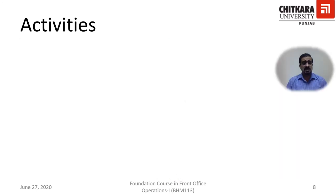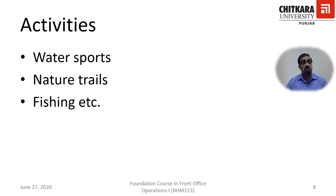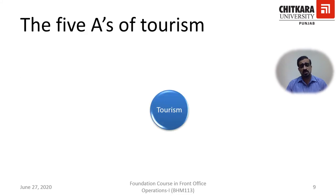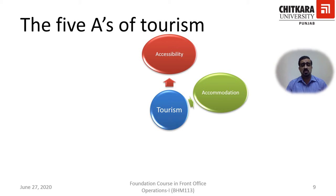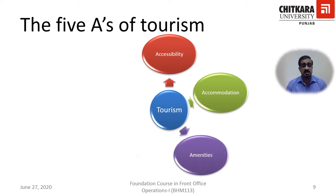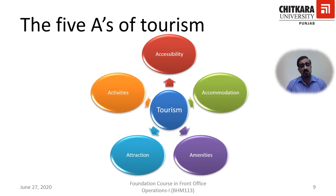There is also social attraction — for example, a person is invited to a marriage, or you just want to visit friends and family. In addition, activities also play a large role in people traveling to a destination — activities like water sports, natural trails, fishing, paragliding for thrill-seekers, and events like a product launch or a convention. So these are the five strong pillars of tourism: accessibility, which is transport and related infrastructure; accommodation, which serves boarding and lodging; amenities required at the destination; and attraction and activities, which form the purpose of travel.